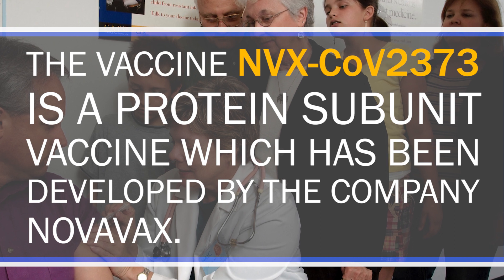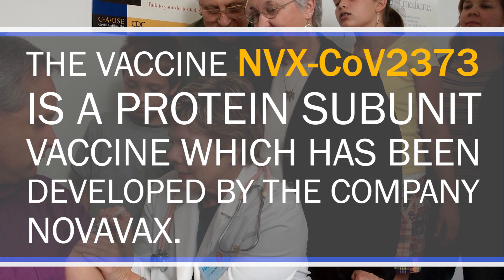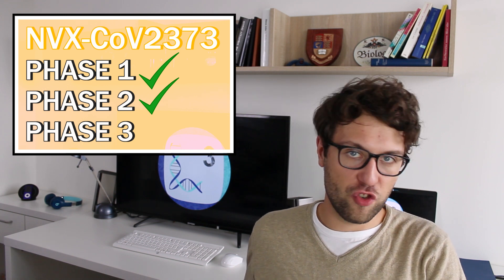The vaccine NVX-CoV2373 is a protein subunit vaccine which has been developed by the company Novavax. This vaccine has also been quite successful in phase one and phase two clinical trials. No severe side effects were noted only one patient got a mild fever. What is quite cool is that volunteers which had been vaccinated showed stronger immune responses against SARS-CoV-2 than people who had been previously infected. Since these results are also quite promising Novavax announced that it will launch a phase three clinical trial in the UK.